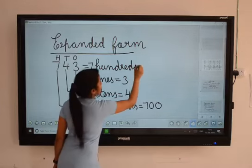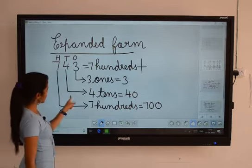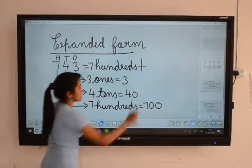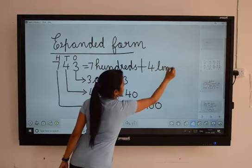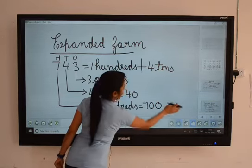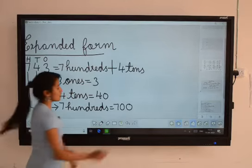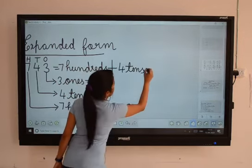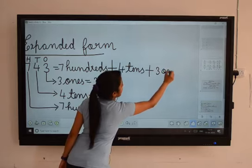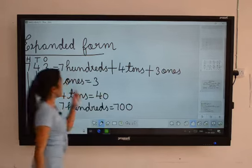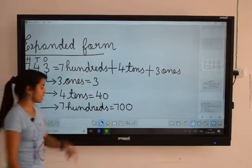After that, write plus. Then the next one is four tens — write four tens. Then the next one: three ones. Then plus three ones. This way also, you can find the expanded form. One more method is there.